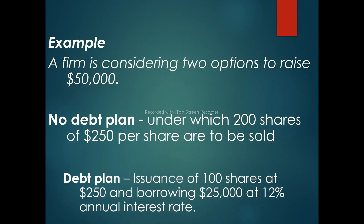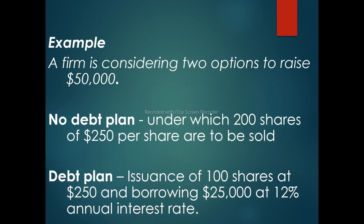Assume the firm is considering two options to raise $50 million. Under the no-debt plan, 200 shares at $250 per share are to be sold. If you have shareholders under each plan, the earnings per share will differ.